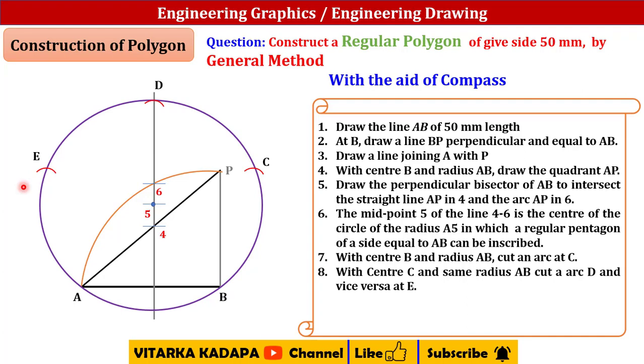Our objective is to draw a pentagon using general method. We have a line from A to B. Next, join a line from B to C. Take a drafter, place it on point B and point C, and connect the line.